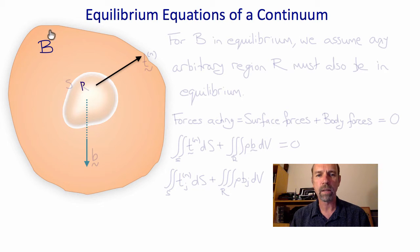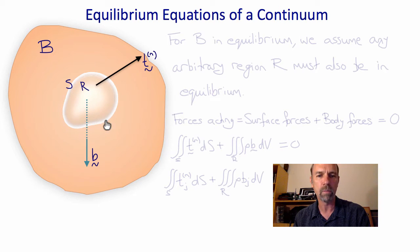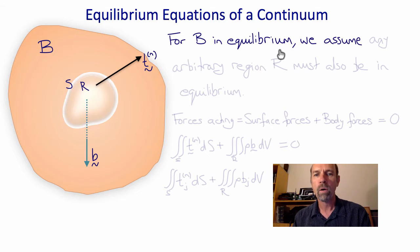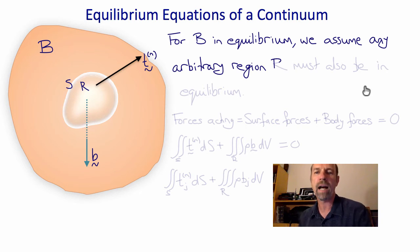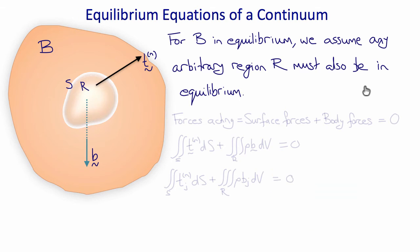Let's start by considering a body B, and in it an arbitrary region R with surface S. Acting on the surface are tractions T superscript N, and acting on the volume of the region, body force vector B per unit mass. For B in equilibrium, we assume that any arbitrary region R of that body must also be in equilibrium, so the sum of the forces — surface forces plus body forces — must equal zero.